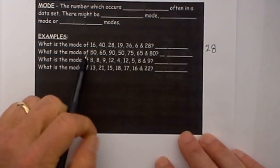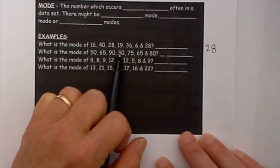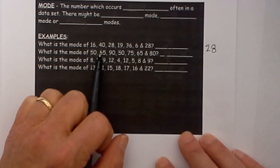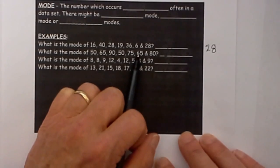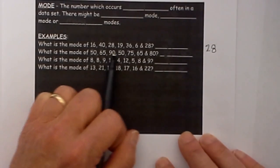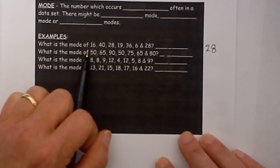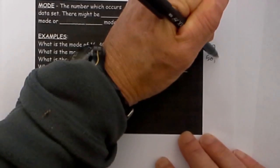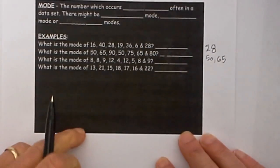Let's move down to the next set quickly. We have 50, it is 2 times, 65 is 2 times, 90 is once, 75 is once, 80. So in this one we have more than one, we have 50 and 65.